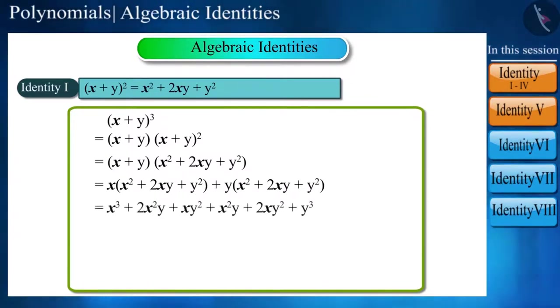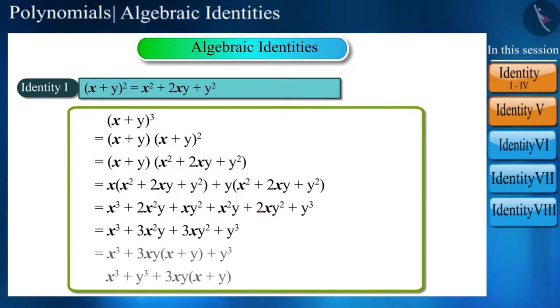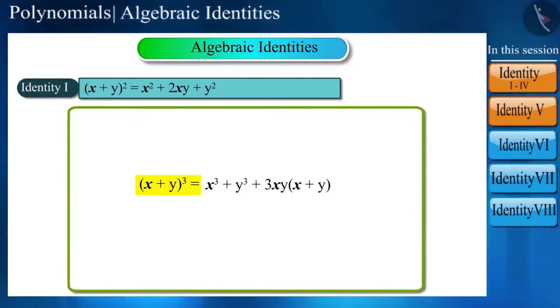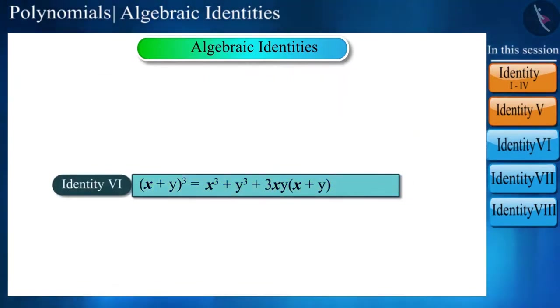When simplified, this becomes x cube plus 3x square y plus 3xy square plus y cube. Or, you can write it like this as well: x plus y to the power of 3 is equal to x cube plus y cube plus 3xy into x plus y. And this is identity 6.